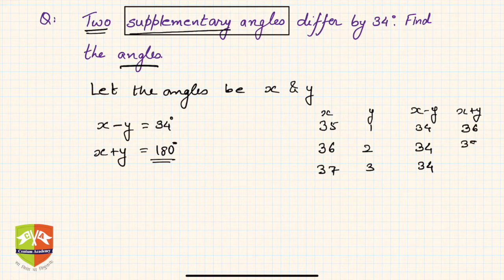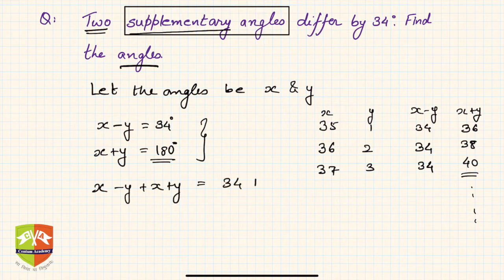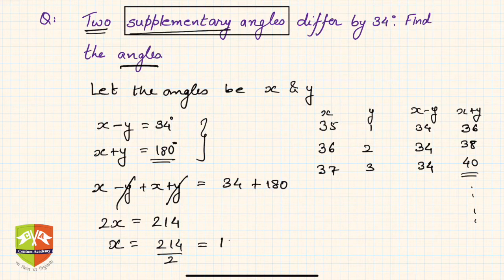We have another smart way of solving this. Add both equations - lhs to lhs, rhs to rhs. You will get x minus y plus x plus y equals 34 plus 180. The y gets cancelled, so you get 2x equals 214. So x is 214 by 2, hence it is 107 degrees.